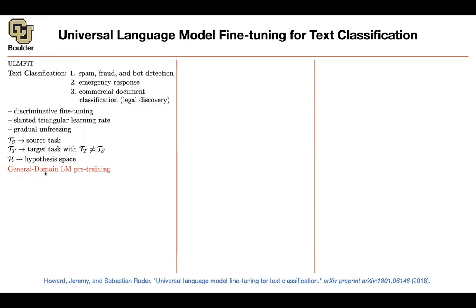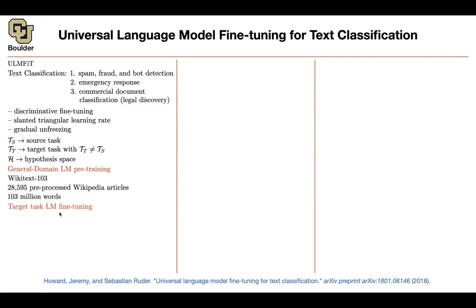We are going to do general domain language model pre-training. First, you train your language model on WikiText — these are Wikipedia articles. This is how many articles are in that dataset, this is how many words you have, and this is unlabeled. Then you train your language model — it's going to be an LSTM. For your text classification task, you're going to have a bunch of text. On those texts, you're going to fine-tune your language model. You're going to ignore the labels and the classes — you're just going to look at the pure text and fine-tune.